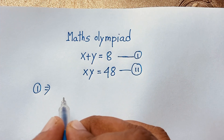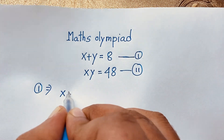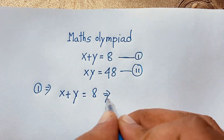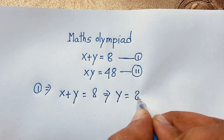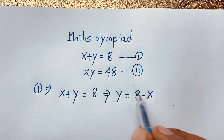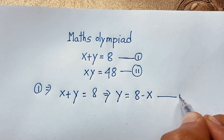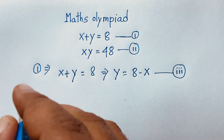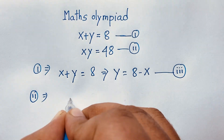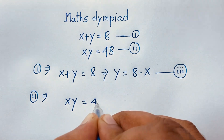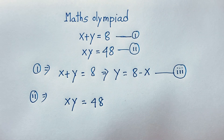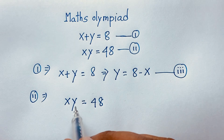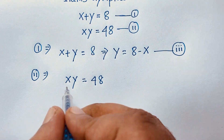According to the first equation, x plus y is equal to 8. We can rearrange this to get y is equal to 8 minus x — this is our third equation. Now looking at our second equation, x times y is equal to 48, and we know y is equal to 8 minus x, so we'll substitute this value into the second equation.